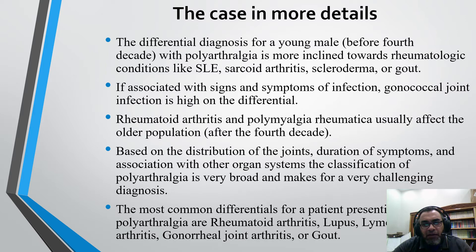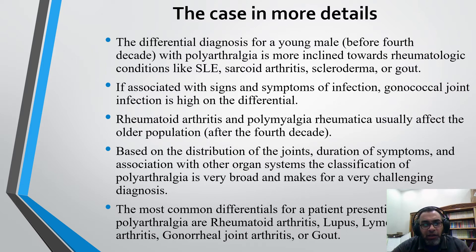For this specific patient, he fulfilled the criteria for systemic lupus erythematosus: positive ANA as an entry criterion, positive anti-double-stranded DNA, and polyarthritis. This equals 12 points and we need only 10 points according to the 2019 classification criteria for systemic lupus erythematosus.